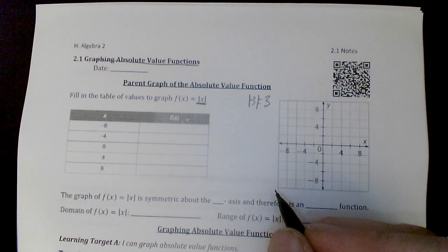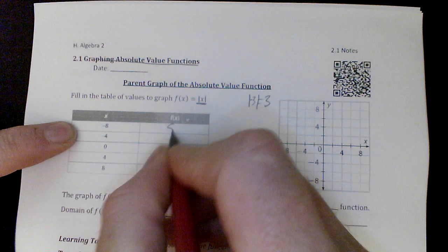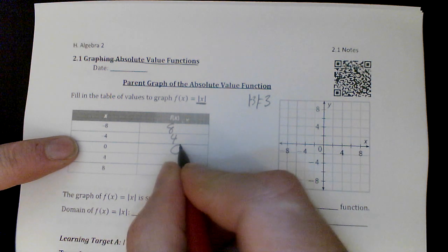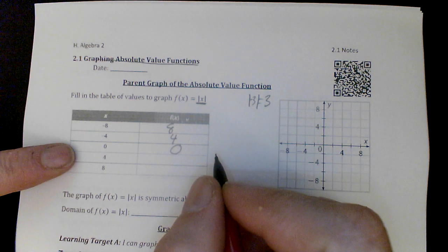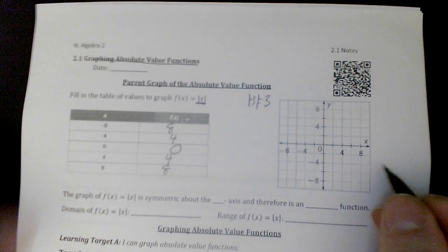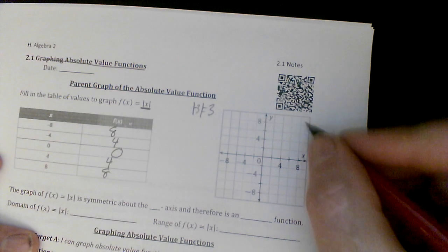So if I inputted negative 8, it would become 8. If I inputted negative 4, it would become 4. If I put in 0, well, 0 doesn't change. It's neither positive nor negative. If I input 4, it stays positive. If I input 8, it turns into a positive.